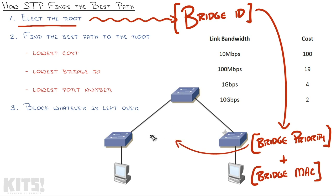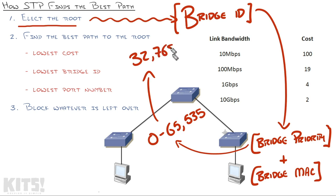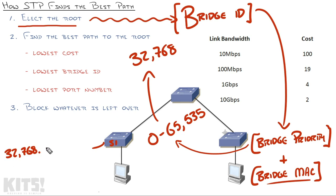The Bridge Priority is just a number between 0 and 65,535. When you pull a switch out of the box running Spanning Tree Protocol, it will have a default priority of 32,768. Keep in mind that Spanning Tree Protocol is an industry standard, so if you claim to be an industry standard switch, you have to abide by these rules. The Bridge MAC address is just the MAC address of the switch — every switch has its own MAC address, not just the MAC addresses it's learning. It has one that belongs to itself. So all of these switches will take that Bridge Priority — let's say it's at default — this switch, Switch 1, has the priority 32,768.